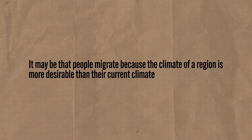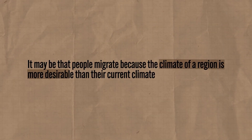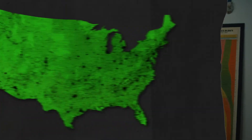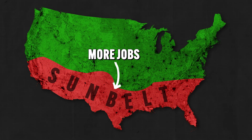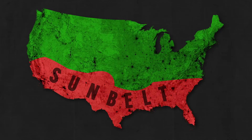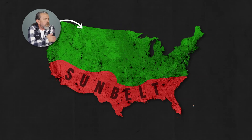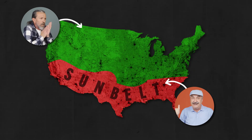Fourth, these factors can be environmental. Earlier I mentioned the mass migration after Hurricane Katrina, and that's a good example. But migration doesn't only occur because of natural disasters — people may also migrate because another region's climate is more desirable. In the middle of the 20th century, many Americans participated in the Sun Belt Migration, partly because jobs were more abundant in that region, but also because people were tired of cold winters in the north and wanted to move to southern states with milder winters.